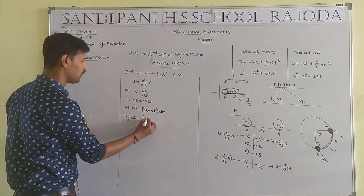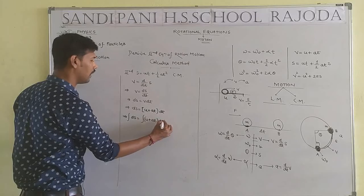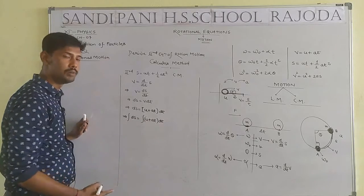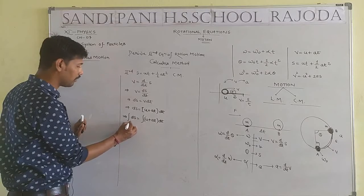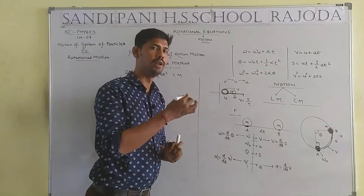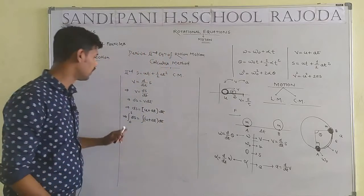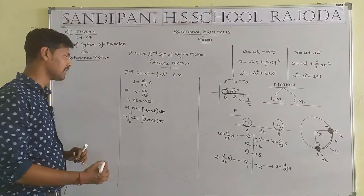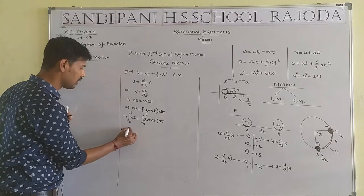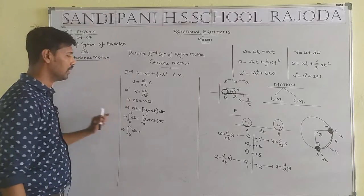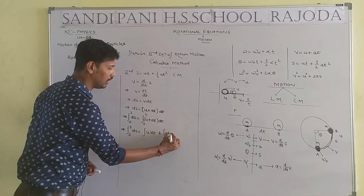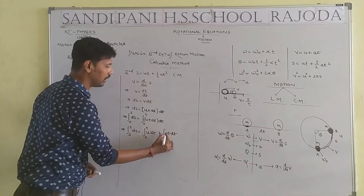Now we take integration on both sides, because we are solving by the calculus (integration) method. Integration with limit 0 to S on the left gives S. Initial displacement is 0, final is S; initial time is 0, final is T. So: ∫₀ˢ dS = ∫₀ᵀ u·dt + ∫₀ᵀ a·t·dt. Separating: S = u∫₀ᵀ dt + a∫₀ᵀ t·dt.